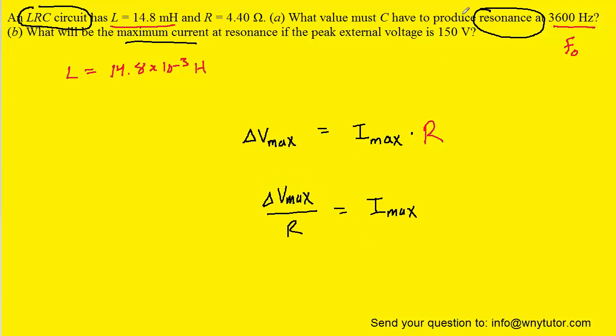The question gives us the value of the maximum potential difference as 150 volts as well as the resistance as 4.4 ohms. So we'll plug those two values in. And when we punch that into our calculators, we should get approximately 34.1. And of course, the standard unit of current is amps. So this is the correct answer to part B.